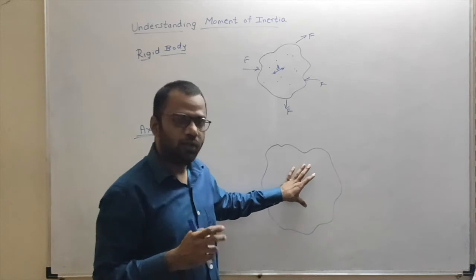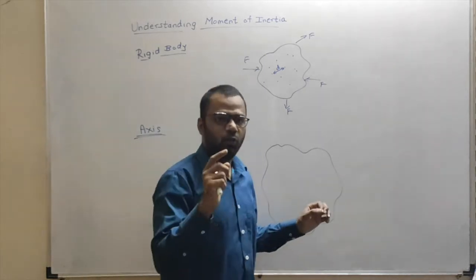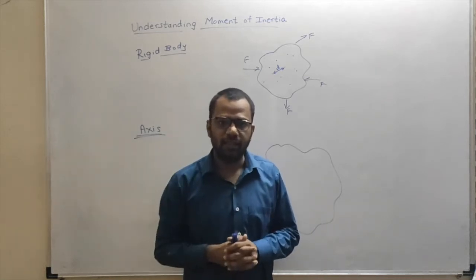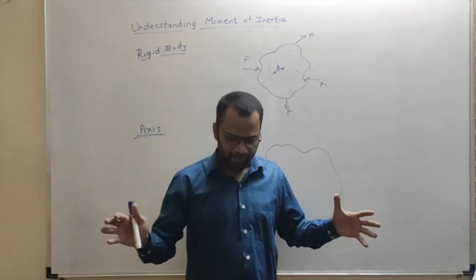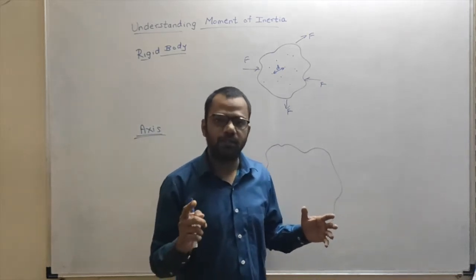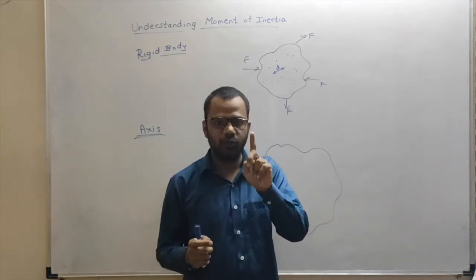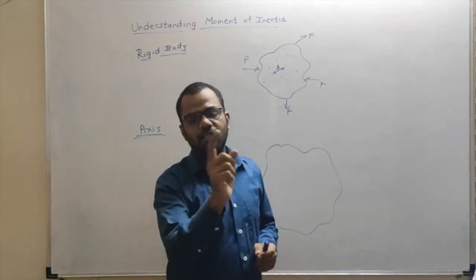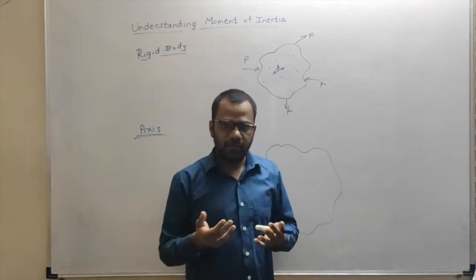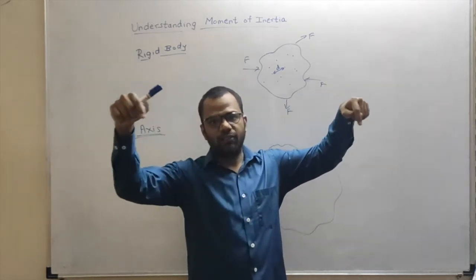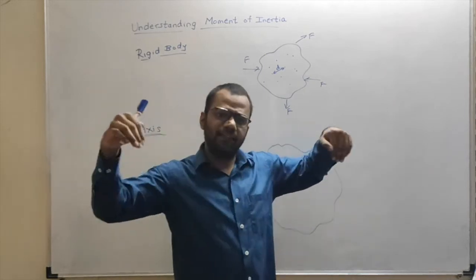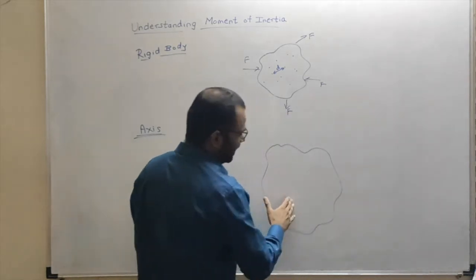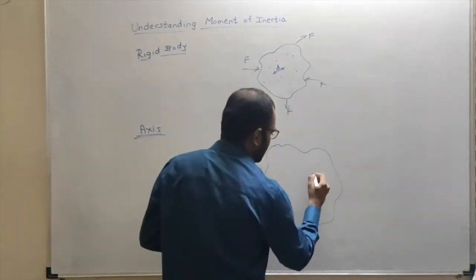If you put a mark on one of the blades of a ceiling fan and switch it on, the entire fan performs rotational motion, but the mark on the blade performs circular motion. In the same way, different particles of the fan will perform circular motion with different radii. Similarly, this body made up of large number of particles — each particle will perform circular motion.